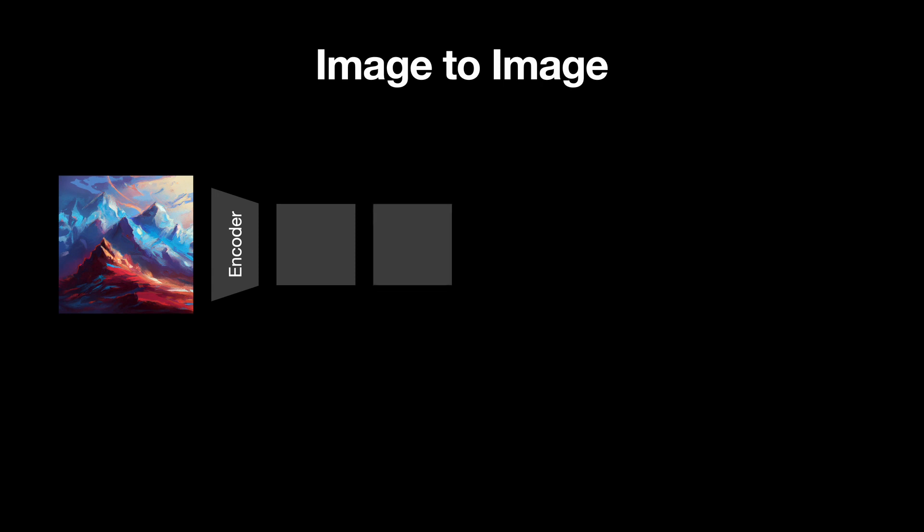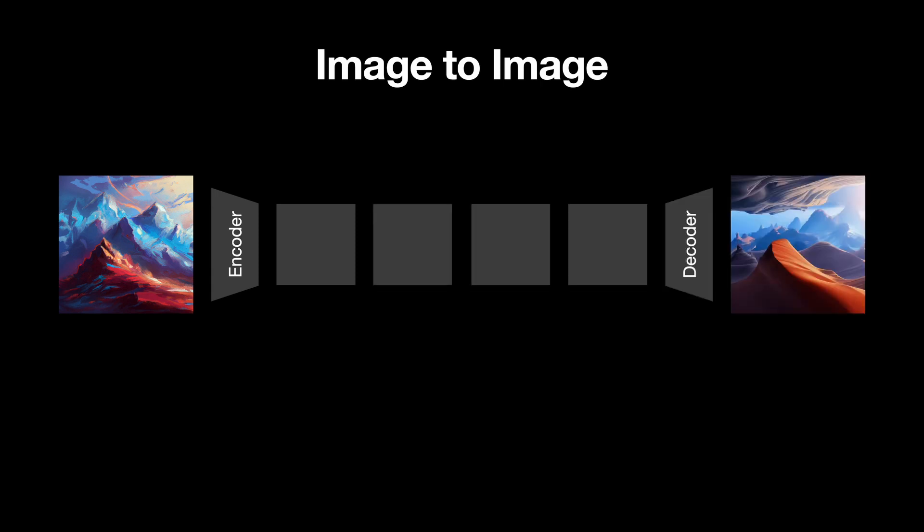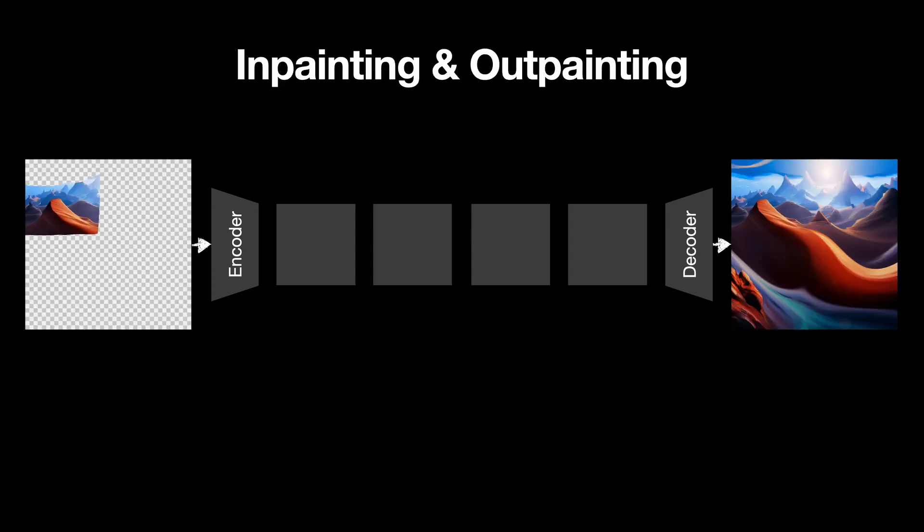To modify an image, for example, we can pass it through the encoder and run the diffusion process for some number of steps on this encoded latent vector, rather than starting with pure noise. We can inpaint or expand images this way too — we can mask images, encode them, and run the diffusion process to fill in the gaps.